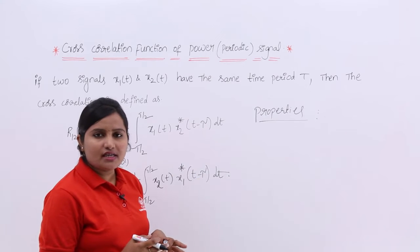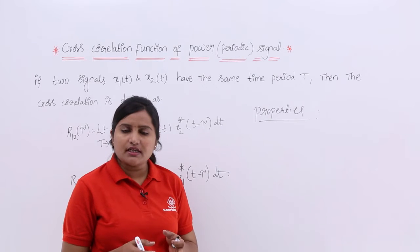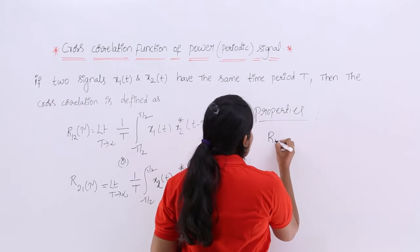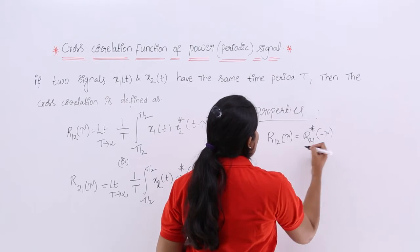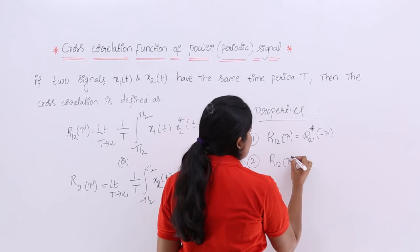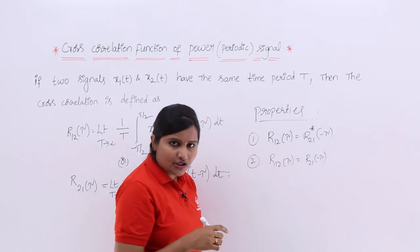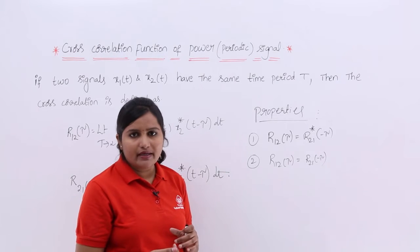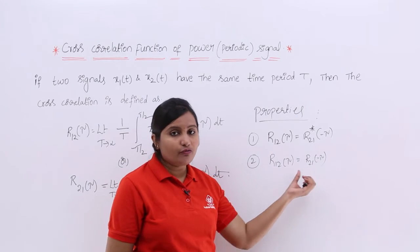The cross correlation function obeys conjugate symmetry. That is, R12(τ) = R21*(−τ). This is the first property. Unlike convolution, R12(τ) is not equal to R21(−τ). In convolution, convolving the first signal with the second or the second with the first gives equal results. But in correlation, correlating first with second or second with first does not give equal results.